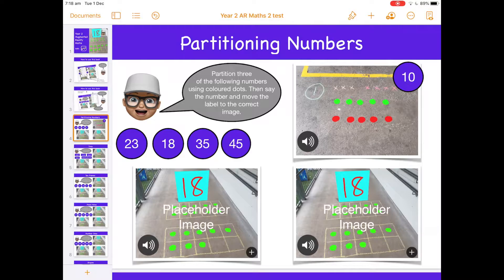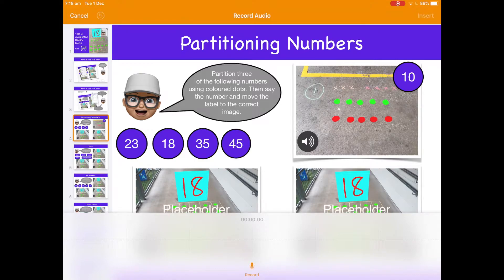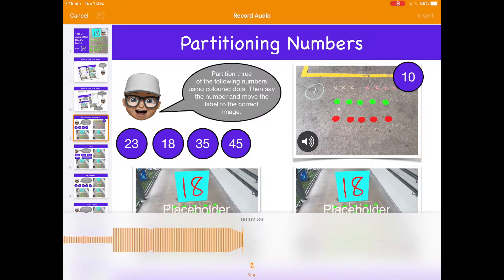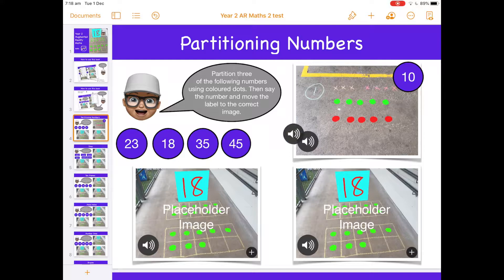My next step is then to go and record some audio to say that that is number 10. So I select the plus at the top, I then go and record audio. This is a partition of number 10. Stop, insert, and there's my little audio file there.